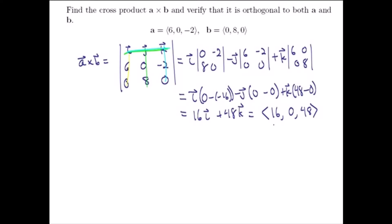Now we want to show that this vector A cross B is orthogonal to both A and B, so let's start by taking A cross B and dotting it with the vector A. Remember that two vectors are orthogonal if and only if their dot product is 0. So if we take 16, 0, negative 48, and dot it with A, which is 6, 0, negative 2,